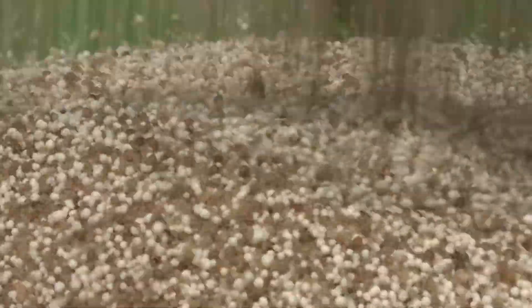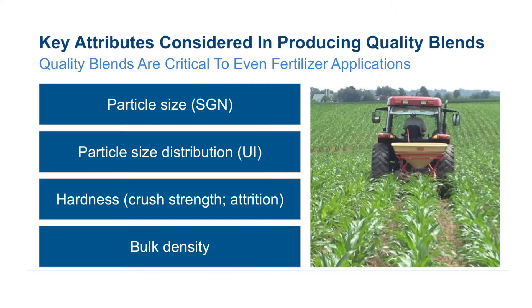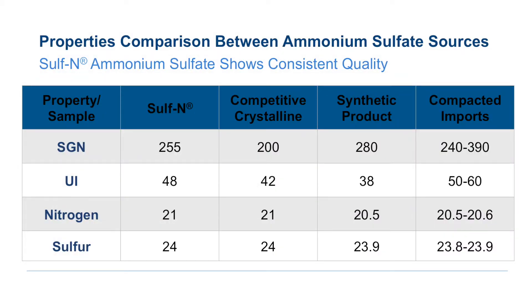Key physical characteristics considered in producing quality blends are particle size, particle size distribution, hardness, and bulk density. Particle size is measured in Size Guide Number, or SGN, with larger or higher SGN particle-sized fertilizers spreading further.